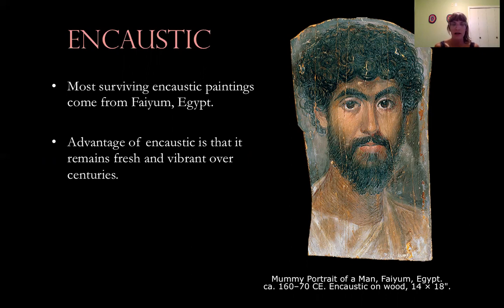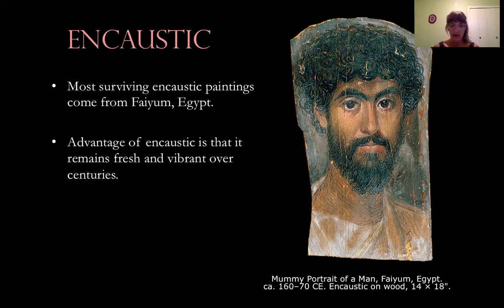The reason encaustic is important is not just because it requires the artist to move quickly, but the advantage of it is that it does remain really fresh and vibrant over centuries. You can see that here with the mummy portrait of a man — an Egyptian portrait from 160 of the Common Era. These colors are quite vivid for being from such an early period, and that is because of the encaustic paint.